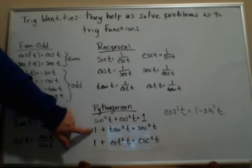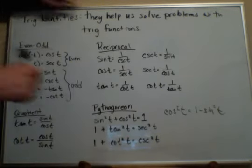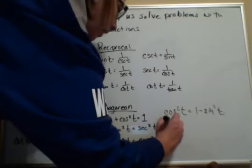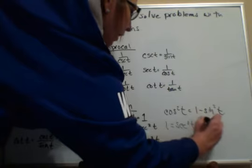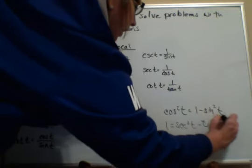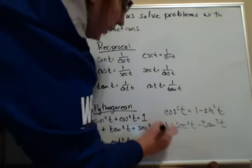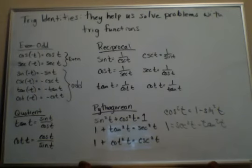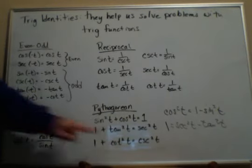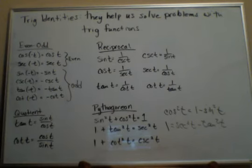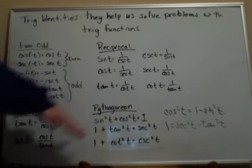Sometimes we might see something like here, if I subtract tangent squared from both sides, I would see that one is equal to secant squared minus tangent squared. And again, sometimes those are just really useful identities for us when we're solving problems. So you can also manipulate these in different ways in order to use them for what we need them for. Okay. So this is all of the identities.